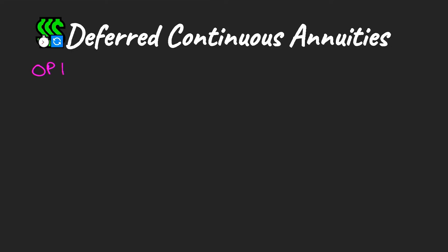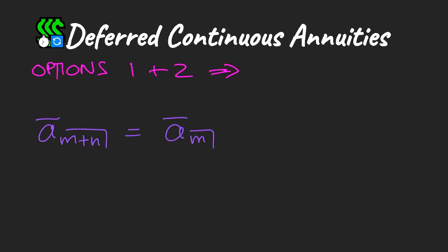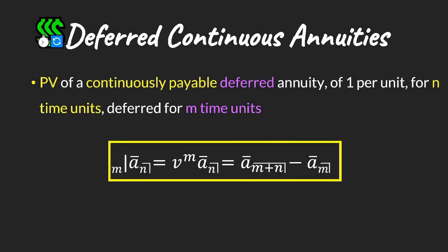Option two for continuous annuities: take two annuities — one paid over m+n and one over the deferment period m — and subtract them to get the annuity we need. Rewriting in integral terms provides another option for the same calculation. Options one and two combined show a relationship very similar to what we saw in discrete time for deferred continuous payments.